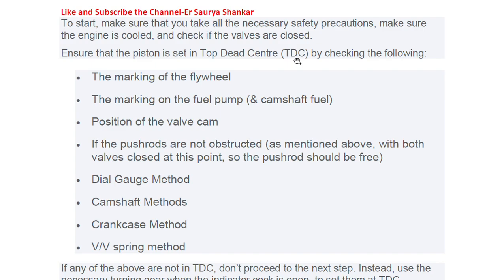How do we check that the piston is at TDC or BDC? There are different methods and techniques. First is the marking on the flywheel — this is straightforward. Second is the marking on the fuel pump, that is the fuel pump method. On the fuel pump there is a window showing the plunger going up and down. There are cut marks on the body of the fuel pump by which you are able to identify the position of the valve cam.